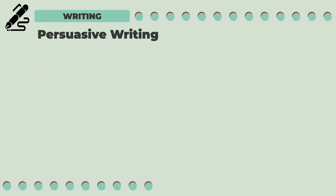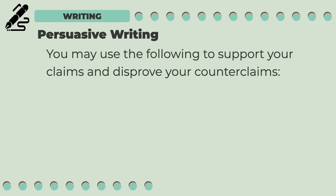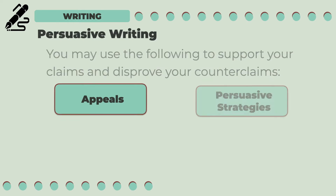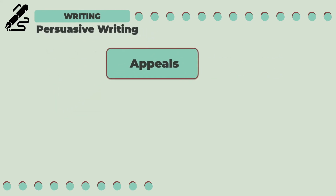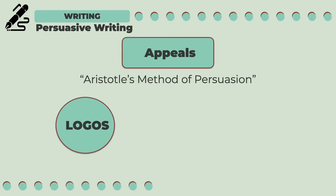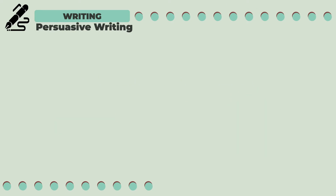In persuasive writing, you may use the following to support your claims and disprove your counterclaims: appeals and persuasive strategies. We have also learned the different appeals in persuasive writing, which are called Aristotle's methods of persuasion. These are logos or appeal to reason, ethos or ethical appeal, and pathos or emotional appeal.